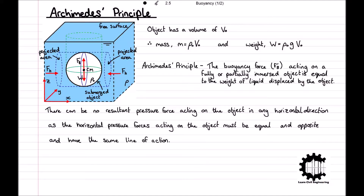As both areas of projection are identical, so are the horizontal pressure forces and the lines of action. Therefore, taking the x coordinate direction to be positive, the resultant horizontal force on the object is equal to Fh minus Fh, which is equal to zero. We can conclude that there is no resultant horizontal pressure force acting on the object, and this principle applies to the y coordinate direction as well.